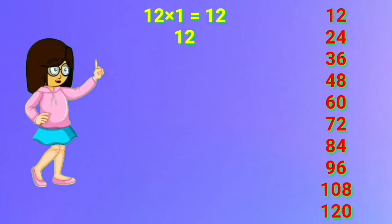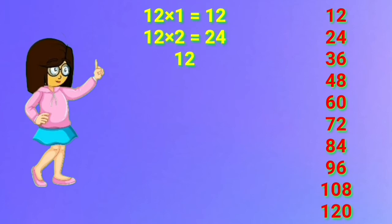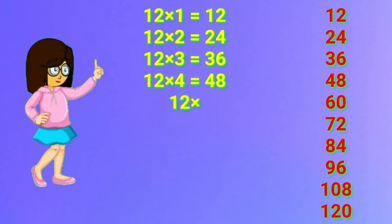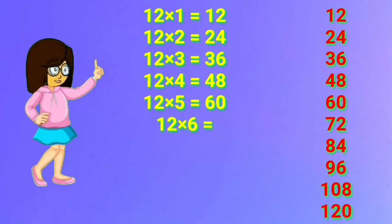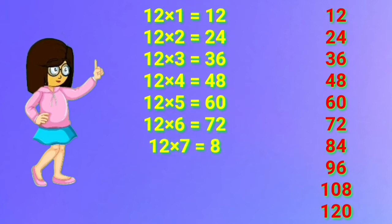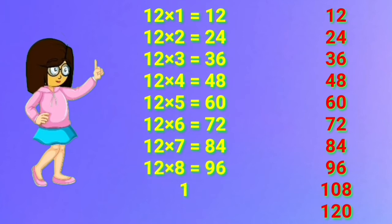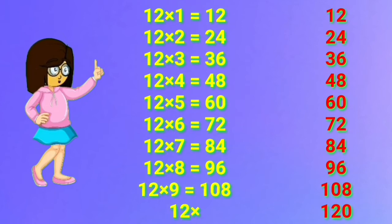12 one's are 12. 12 two's are 24. 12 three's are 36. 12 four's are 48. 12 five's are 60. 12 six's are 72. 12 seven's are 84. 12 eight's are 96. 12 nine's are 108. 12 ten's are 120.